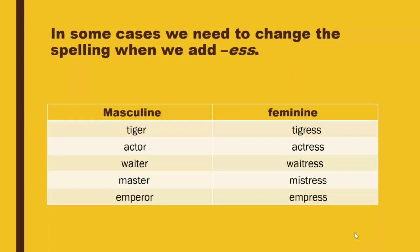Masculine: waiter, spelled W-A-I-T-E-R — Feminine: waitress, spelled W-A-I-T-R-E-S-S. Masculine: master — Feminine: mistress, spelled M-I-S-T-R-E-S-S. Masculine: emperor, spelled E-M-P-E-R-O-R — Feminine: empress, spelled E-M-P-R-E-S-S.